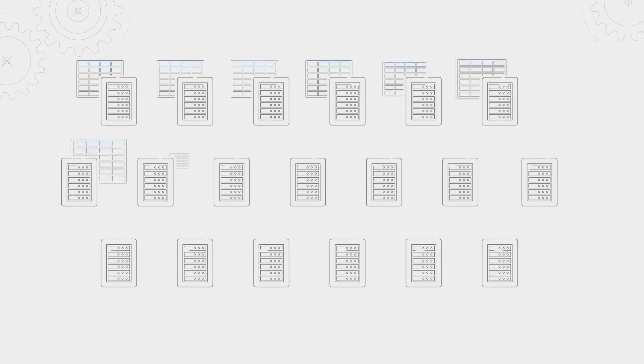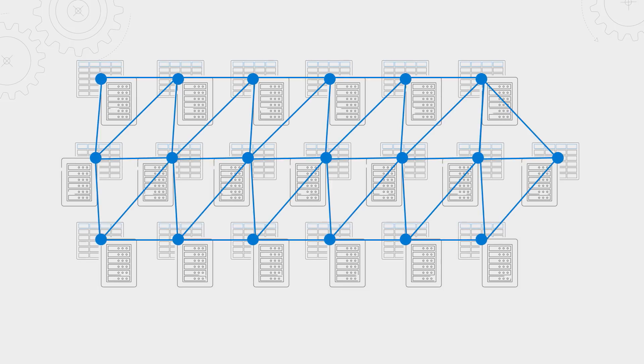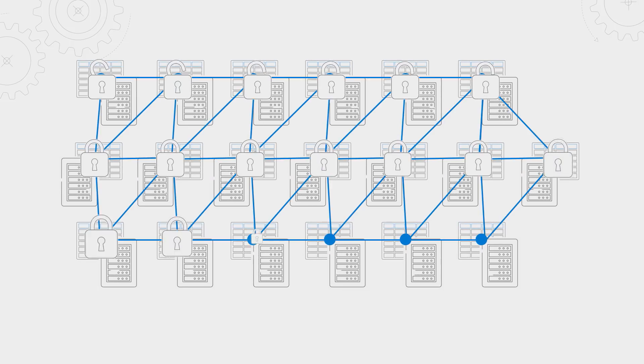So what makes the technology different than, say, a relational database or workflow tools that we have now? Blockchain has two unique characteristics. The first is that the ledger is distributed, or shared. The second is that it's cryptographically immutable.